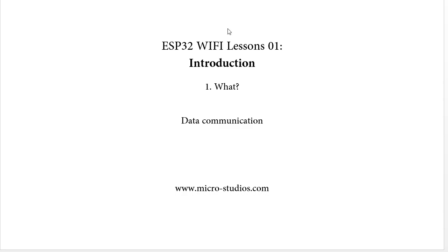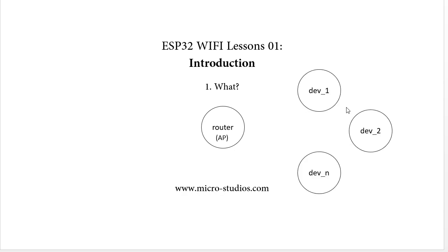For the Wi-Fi model, usually we will have a router — we can also call it an AP, access point. And we also have some devices: Device 1, Device 2, and Device N. And we will have one PC here, or another device — Device 0.